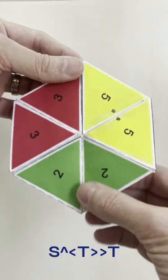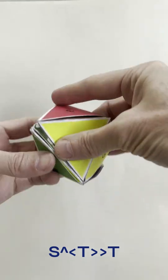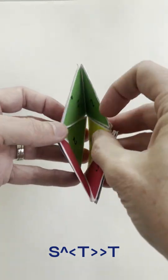To get back to the solid colors, we'll do the inverse of that sequence starting with a pyramid shuffle followed by two tuck flexes.